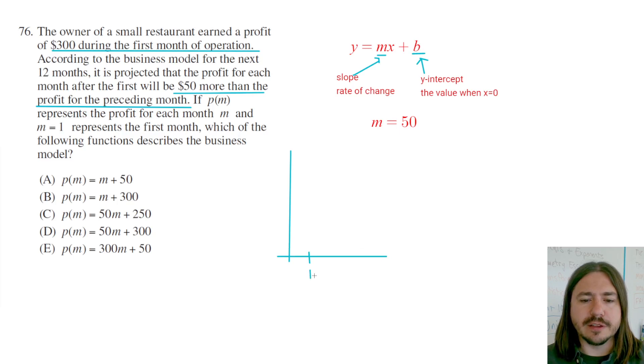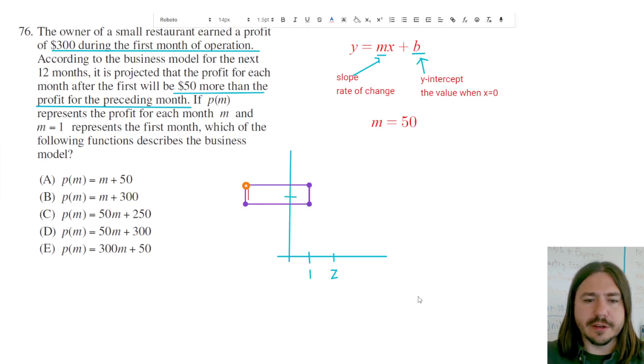If we think about this, I'm just going to make two little marks here. Month one, month two. In the first month it was $300, and then the second month would be $50 more than that, so that'd be $350. And every month thereafter is going to be $50 extra. So the first month is $300, the second month is $350, and so forth.